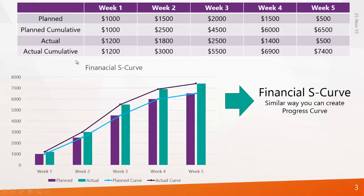Here I have given an example. Let's assume there is a project that is five weeks long. You have a plan to spend $1,000 on week one, $1,500 on week two, $2,000 on week three, $1,500 on week four, and $500 on week five. The cumulative will be $1,000 on week one, $2,500 on week two, and it goes on to make $6,500 on week five. So your total budget of this project is $6,500.